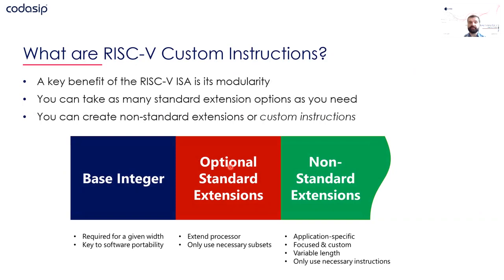The ISA is designed in a modular way. You have the base integer set of instructions — more than 14 instructions — with two variants: either 16 registers or 32 registers. Then there are optional standard extensions, either ratified or to be ratified, such as M for multiply and divide, C for compact instructions, or floating point operations. You can pick and choose the combination you need for your application.